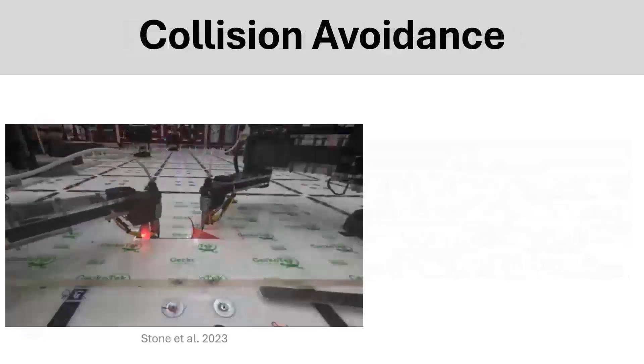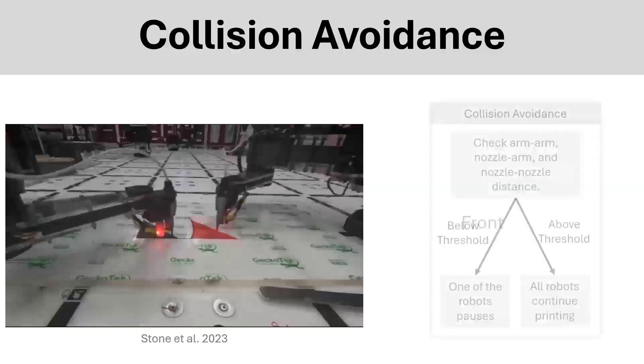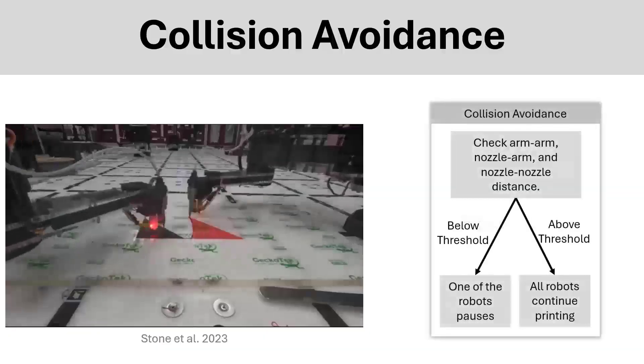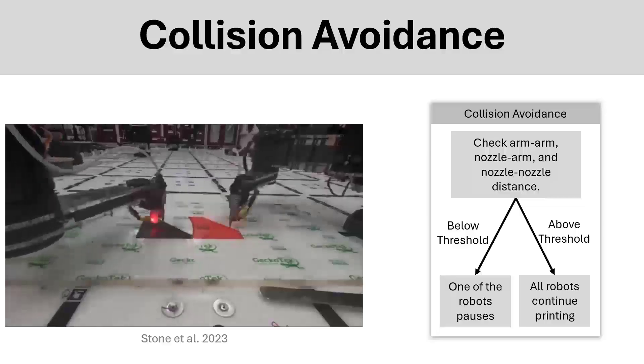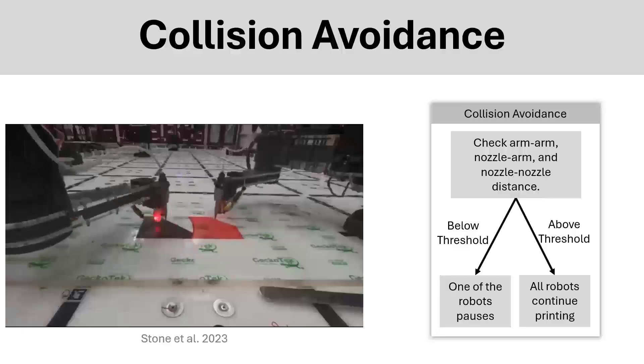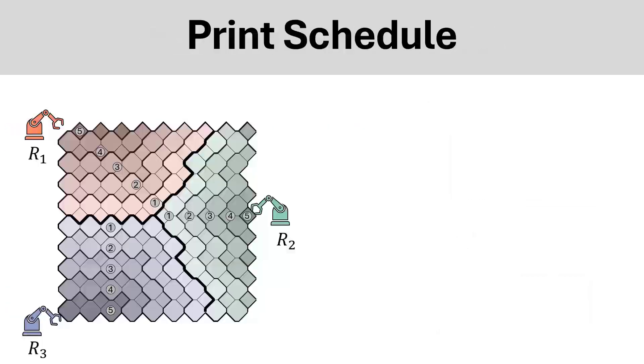Our collision avoidance strategy relies on robots checking position between each other 10 times a second, and if it's below a threshold, one of the robots will pause. Otherwise, all robots will continue printing. We are always constrained to be layer-wise, meaning robots can't work to the next layer without all other robots finishing that layer.